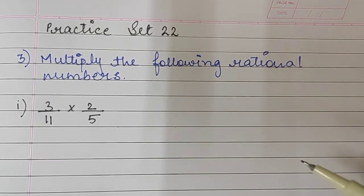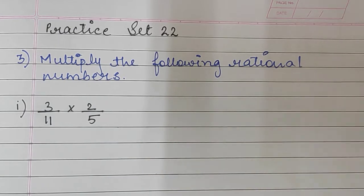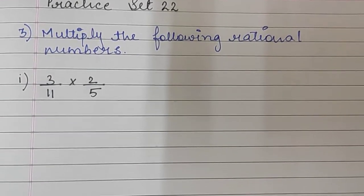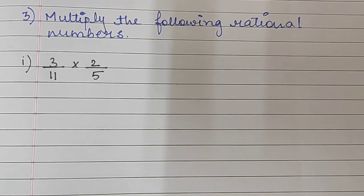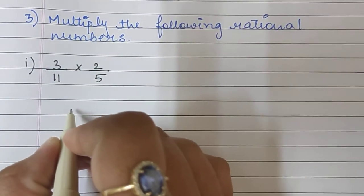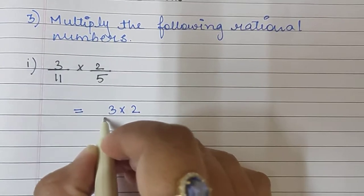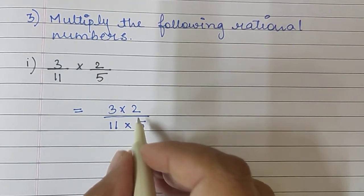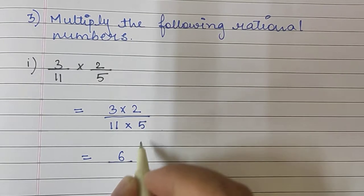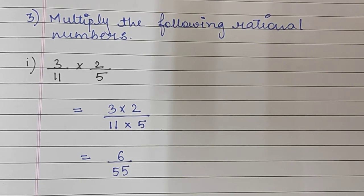The first sum of the third question is 3 upon 11 multiplied by 2 upon 5. Here we don't need to equalize the denominator — in multiplication we don't need to equalize the denominator and there is no need to find the LCM. We will directly multiply the numbers. So we write 3 multiplied by 2 upon 11 multiplied by 5, giving us 6 upon 55. Multiplication sums are very simple — you just have to directly multiply them.